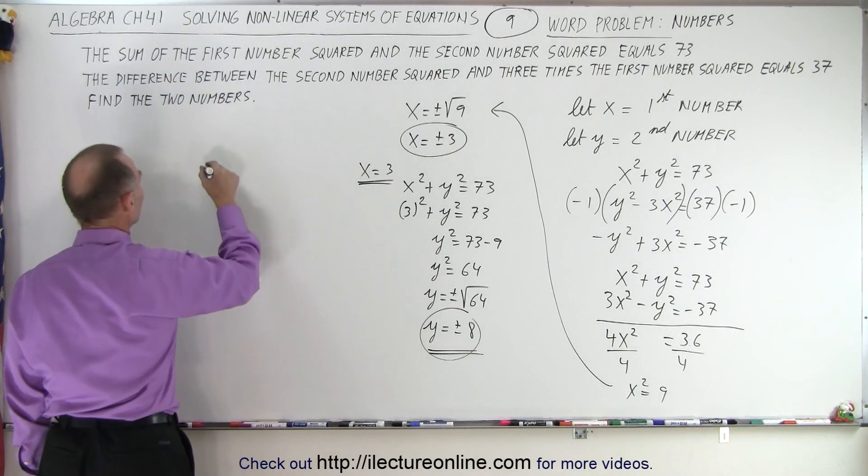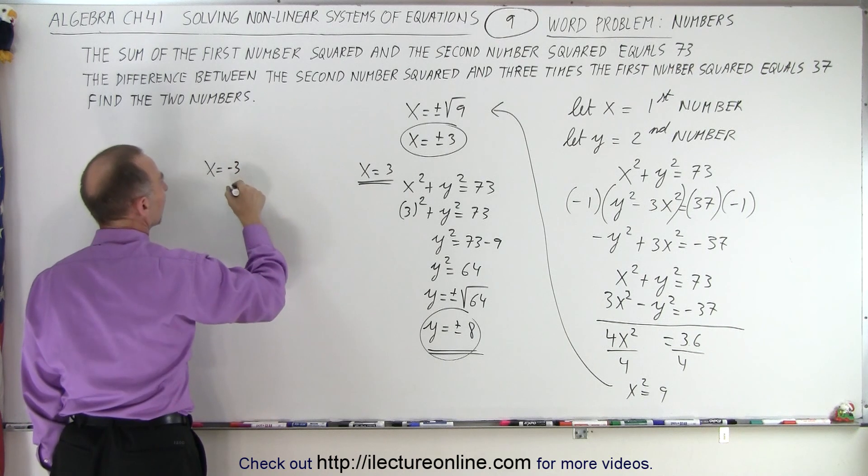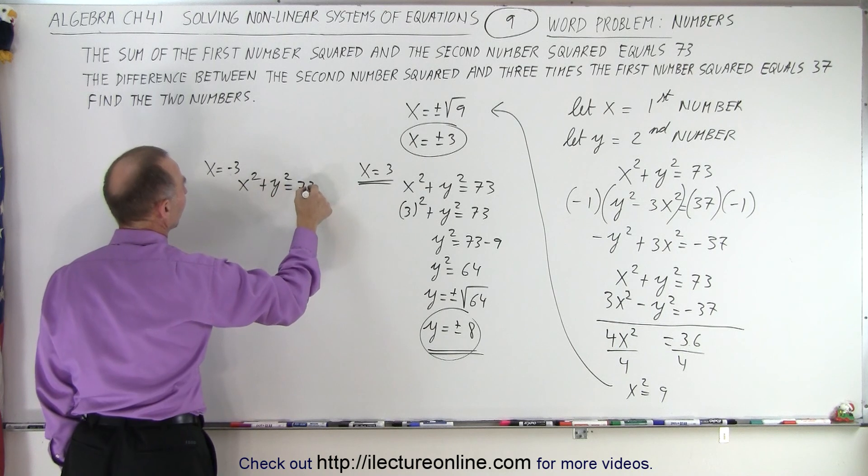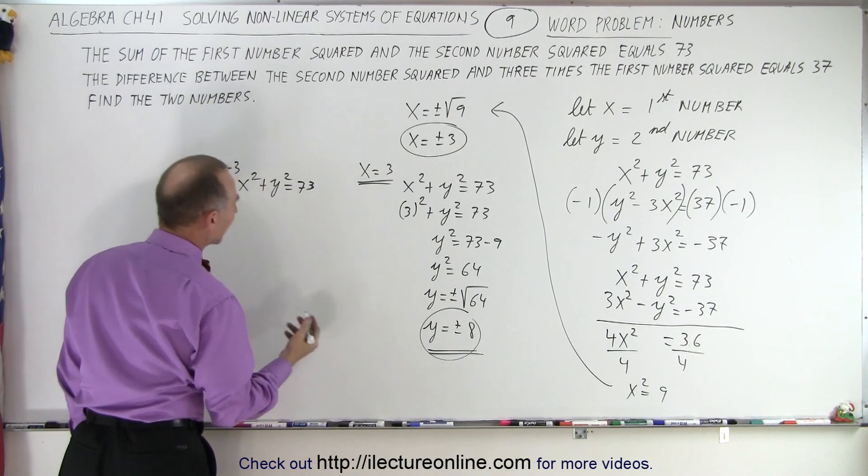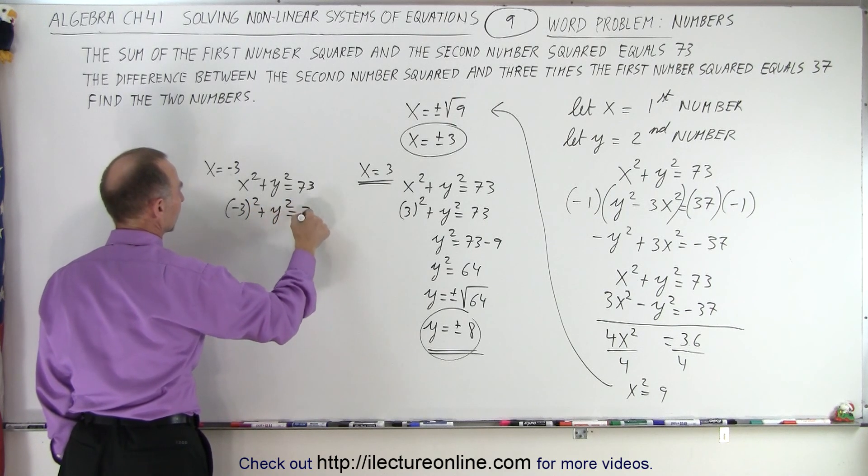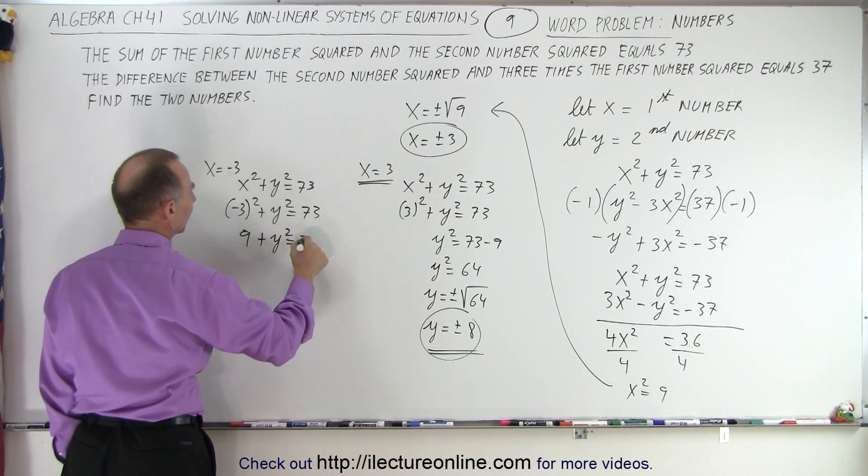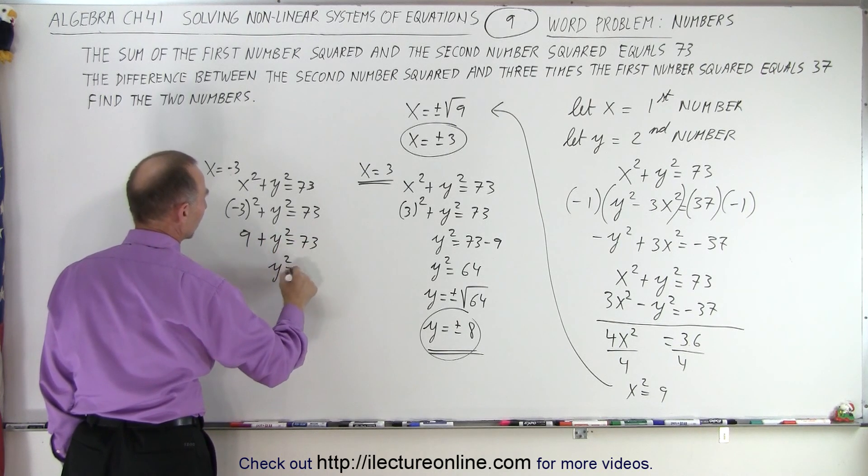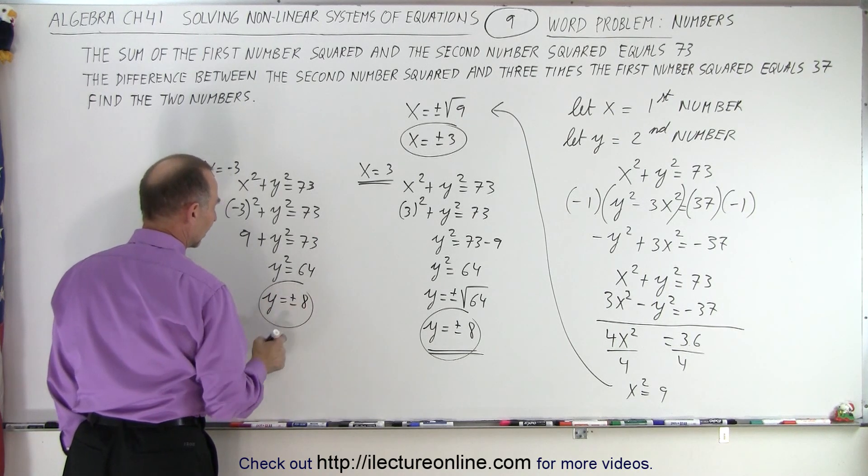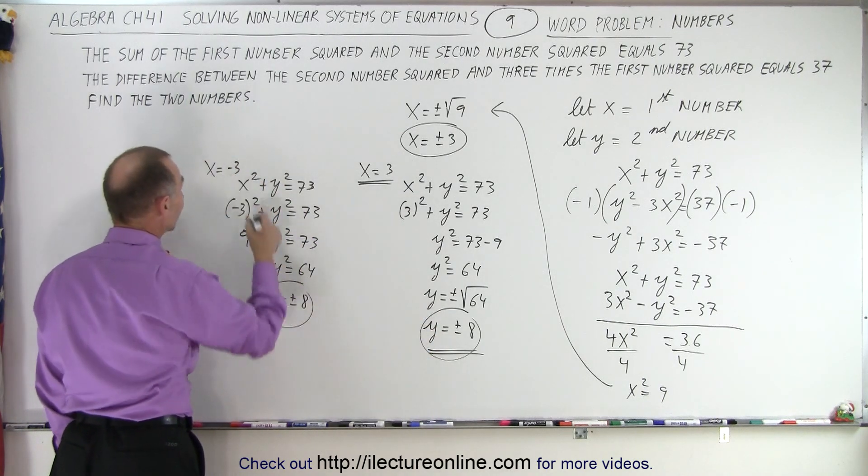Now what if x is equal to negative 3? Then we have x squared plus y squared equals 73. And notice we get the same result because x is squared. So this gives me also a positive 9 plus y squared equals 73 or y squared equals 64. Therefore, y is equal to plus or minus 8. So notice that you get the same result for x equals 3 as you do for x equals minus 3.